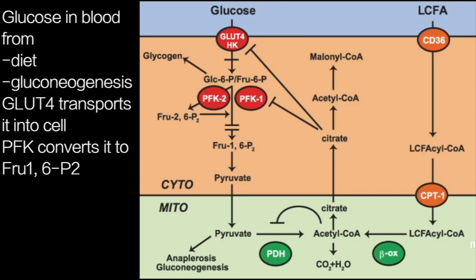We then have a series of reactions involving two isoforms of an enzyme called phosphofructokinase — PFK — isoform 1 and isoform 2. They function to bring the glucose down to the next step in the chain, producing a molecule called fructose 1,6-biphosphate, or FRU1,6-P2.